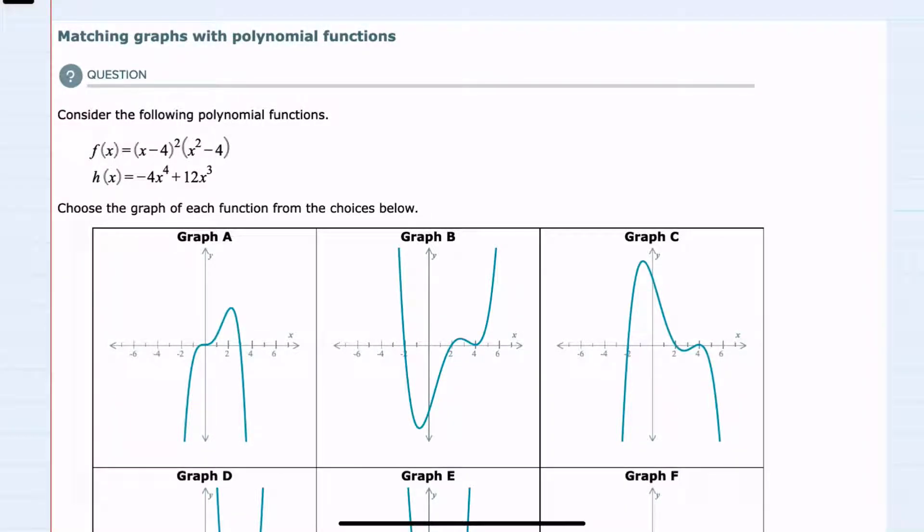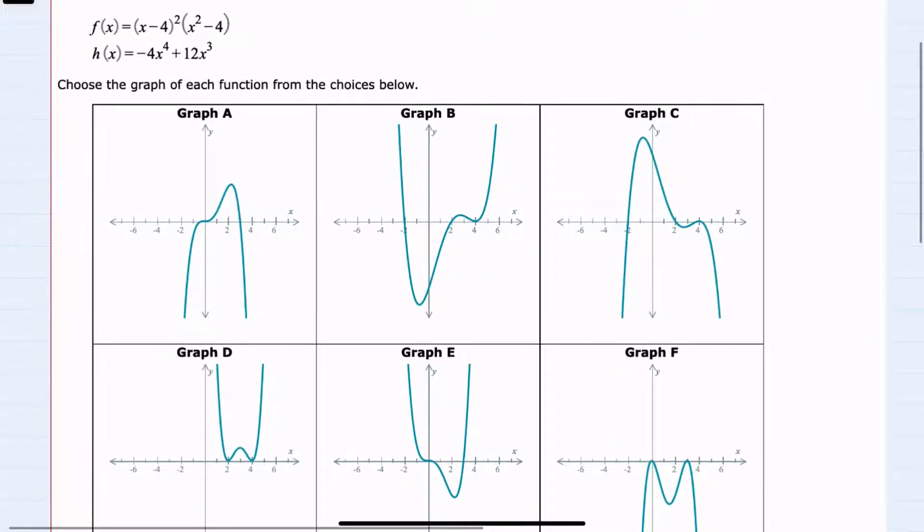In this video, I'll be helping you with the Alex problem type called matching graphs with polynomial functions. We're given two functions here, f of x and h of x, and we're asked which of these graphs matches either f of x or h of x. There's a couple different things that we can look at to make this determination.